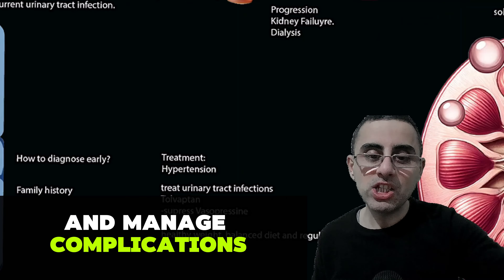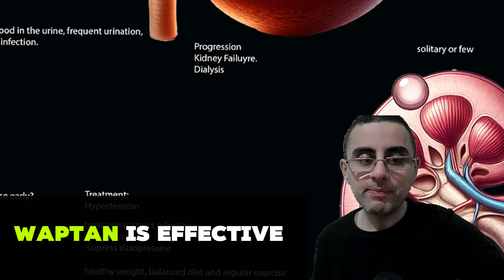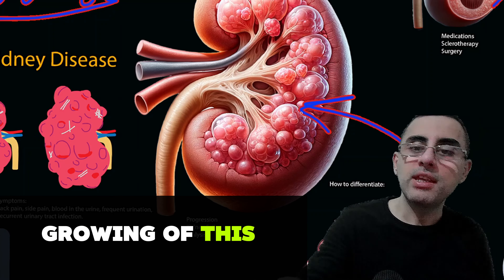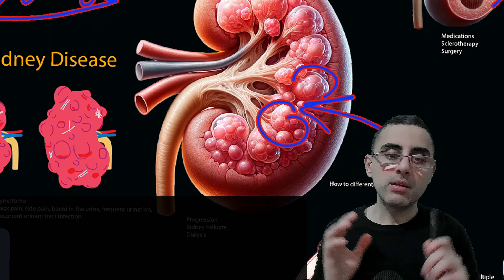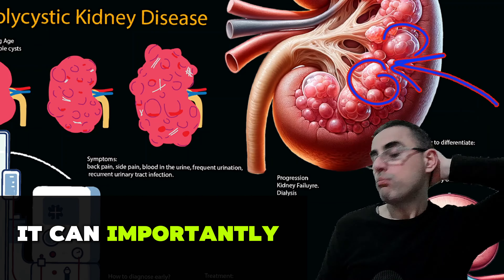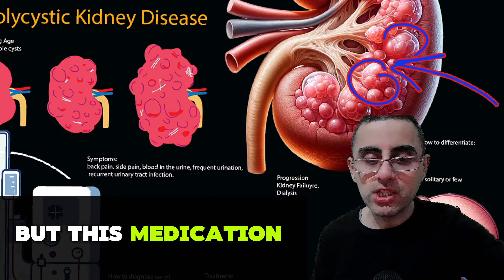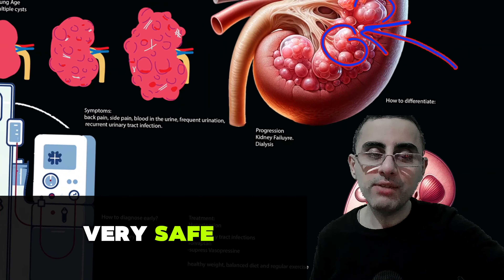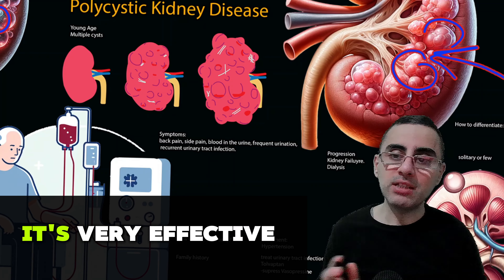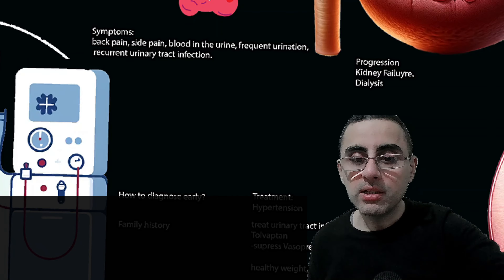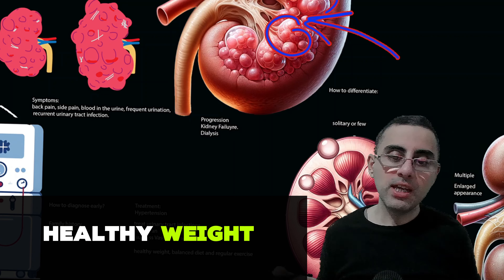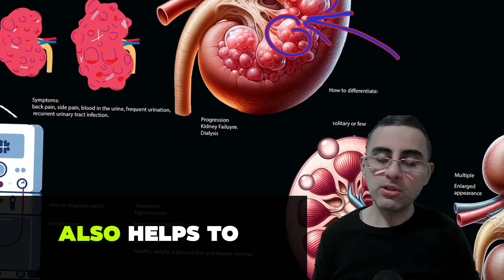The medication tolvaptan is effective — it suppresses vasopressin, which is a hormone that stimulates the growth of these cysts. Suppression and inhibition of vasopressin is a treatment for polycystic kidney disease and can importantly slow down the process. However, this medication is toxic for the liver, so it's not very safe. But if there is fast-progressive disease and the person starts treatment at early stages, it's a very effective treatment that can importantly slow down kidney damage.